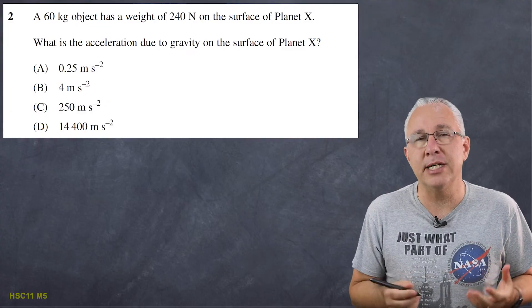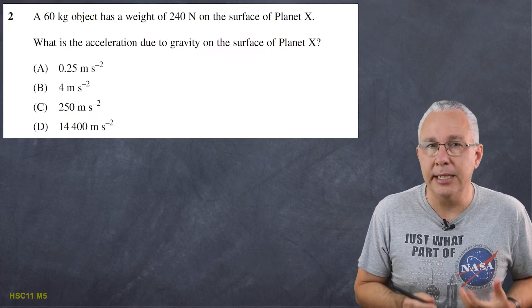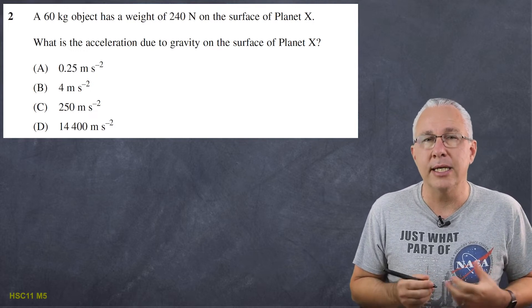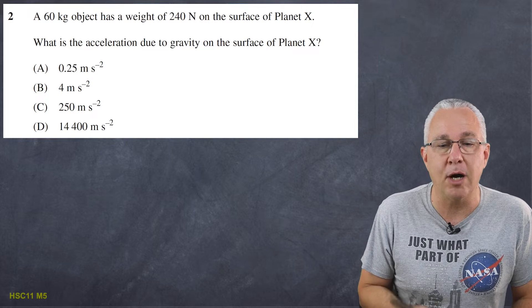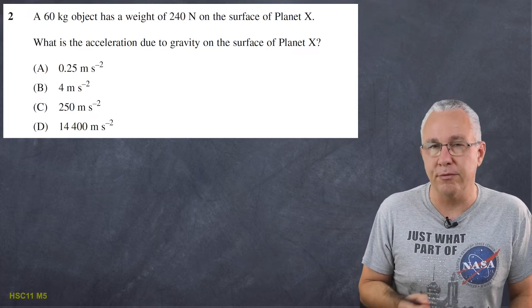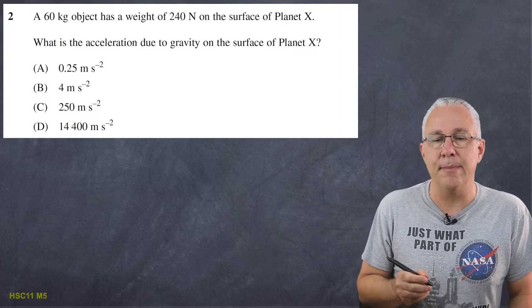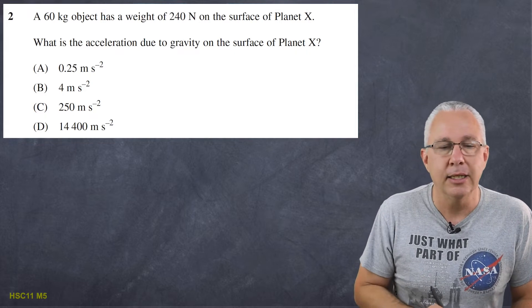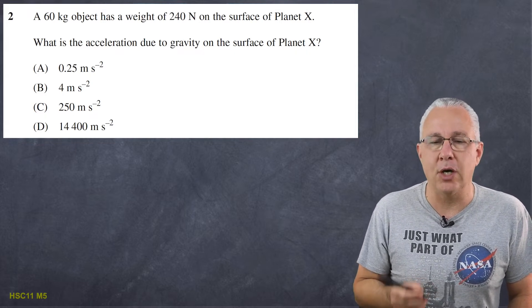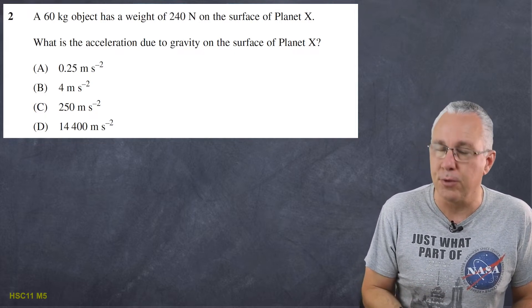Our first question is a relatively straightforward question dealing with the idea of weight in a gravitational field. So what we have is a 60 kilogram object that has a weight of 240 newtons on a planet called planet X. What is the acceleration due to gravity on that planet X? And we've got four options.